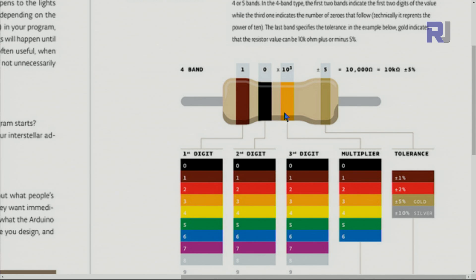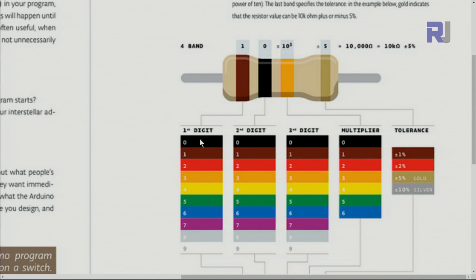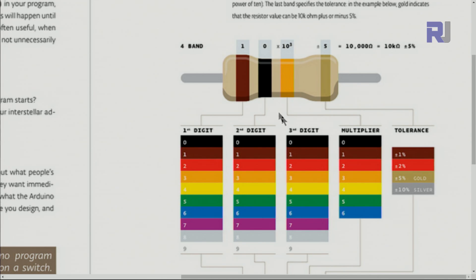The resistor color code starts from black and goes up to white. Each color has an associated value: black is 0, brown is 1, red is 2, orange is 3, yellow is 4, green is 5, blue is 6, purple is 7, gray is 8, and white is 9. For example, a three-band resistor with brown, black, orange: brown is 1, black is 0, and orange means three zeros, giving 10,000 ohms or 10 kilo-ohms.